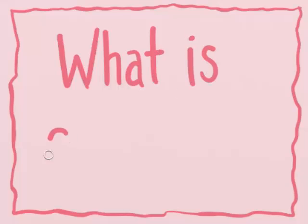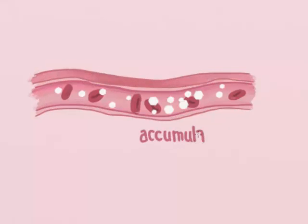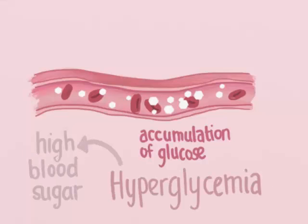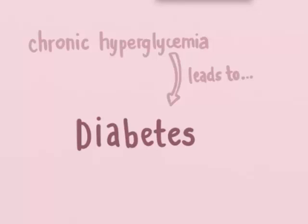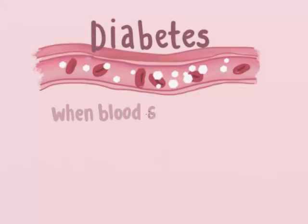Now that we've got some background, what then is diabetes? When the body can't control the level of glucose in the bloodstream, glucose can build up and lead to hyperglycemia, or high blood sugar. Chronic hyperglycemia leads to the development of diabetes. Basically, diabetes is when blood sugar levels are too high for too long.